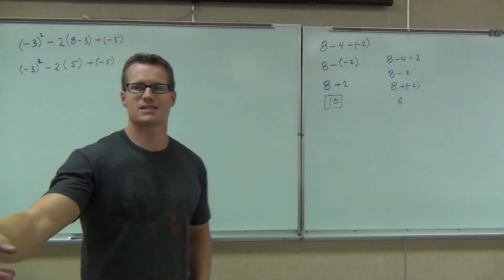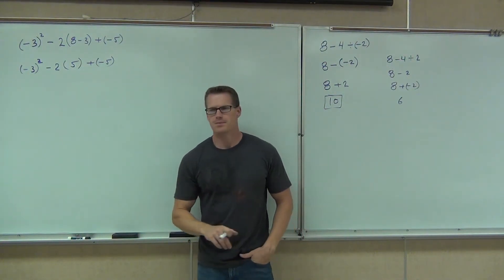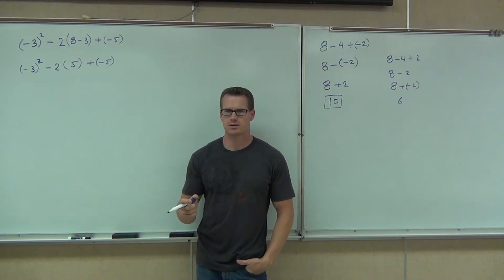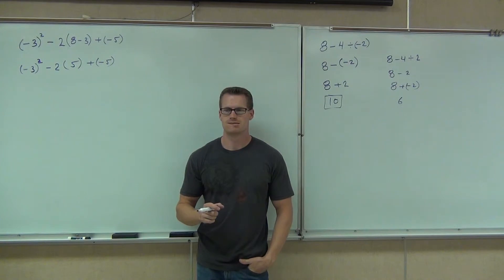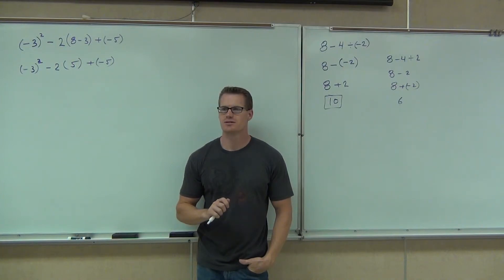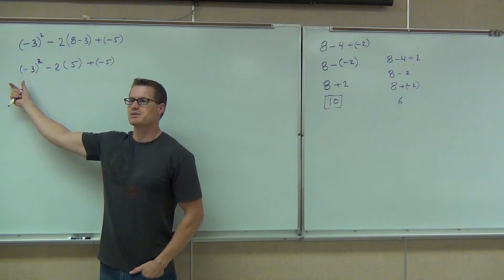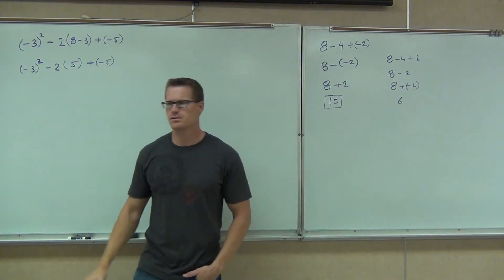Okay, let's keep going. What's the next thing — let's look at the exponent. On that exponent, is the negative going with the 3 or not? It's all about the parentheses — it's in the parentheses, so it goes with the 3. It's in the parentheses, so it goes with that thing. This means negative 3 times negative 3. How much is negative 3 times negative 3? Positive 9. Perfect.